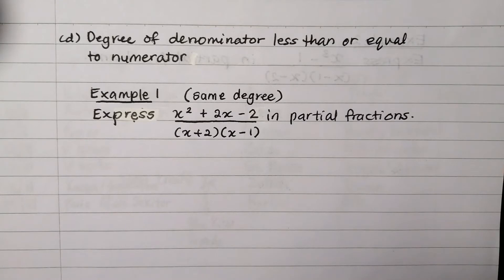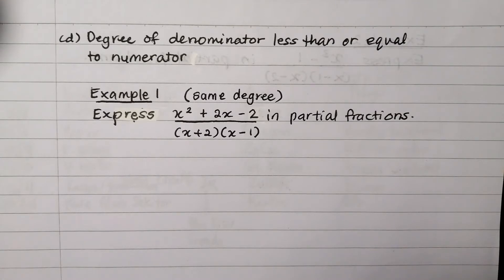Express (4x² + 2x − 2) over (x + 2)(x − 1) in partial fractions. The first step is to expand the denominator.